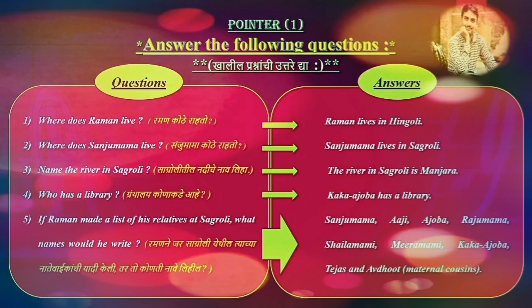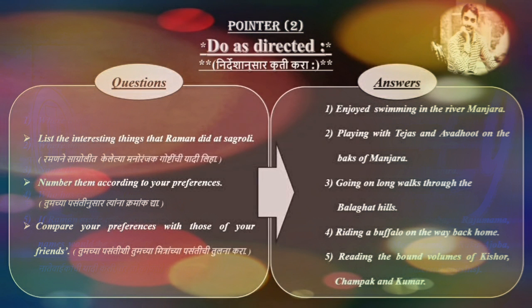Fifth question: If Raman made a list of his relatives at Sagruli, what names would he write? Answer: Sanju Mama, Azi, Azoba, Raju Mama, Shaila Mama, Meera Mama, Kaka Azoba, Tejas and Avadut.